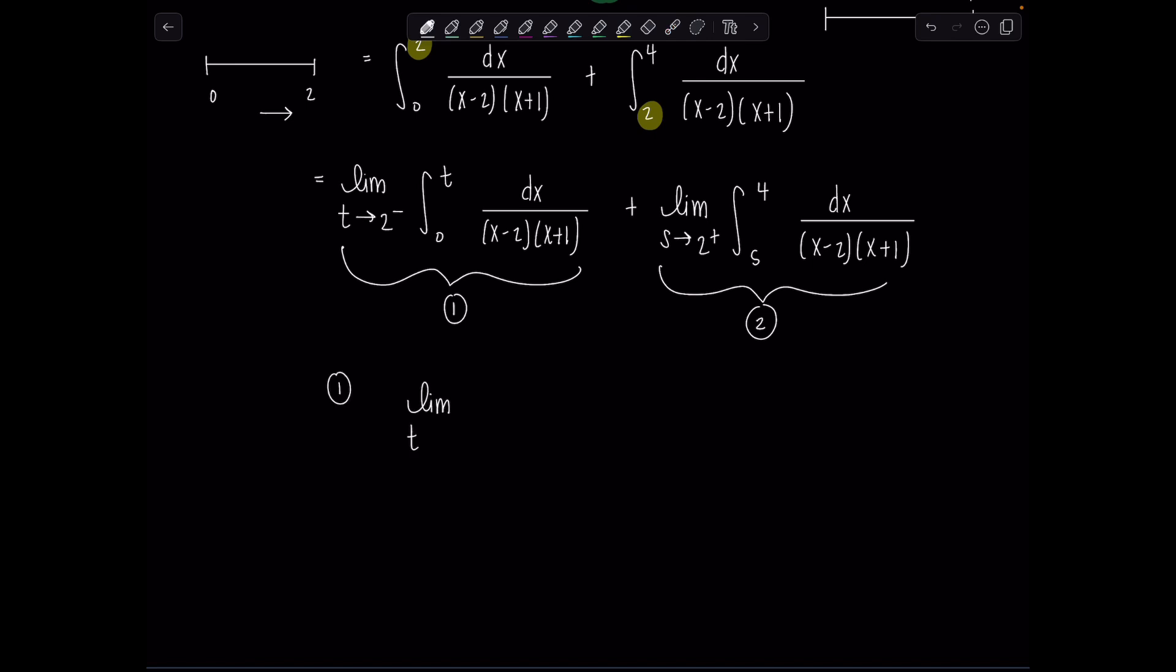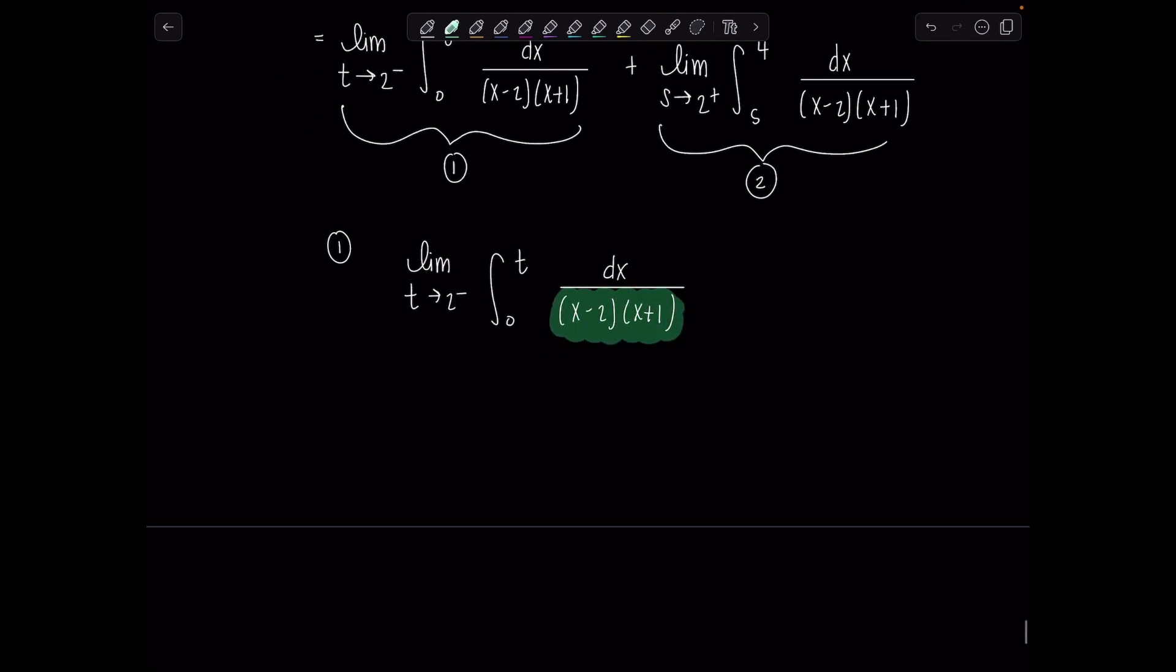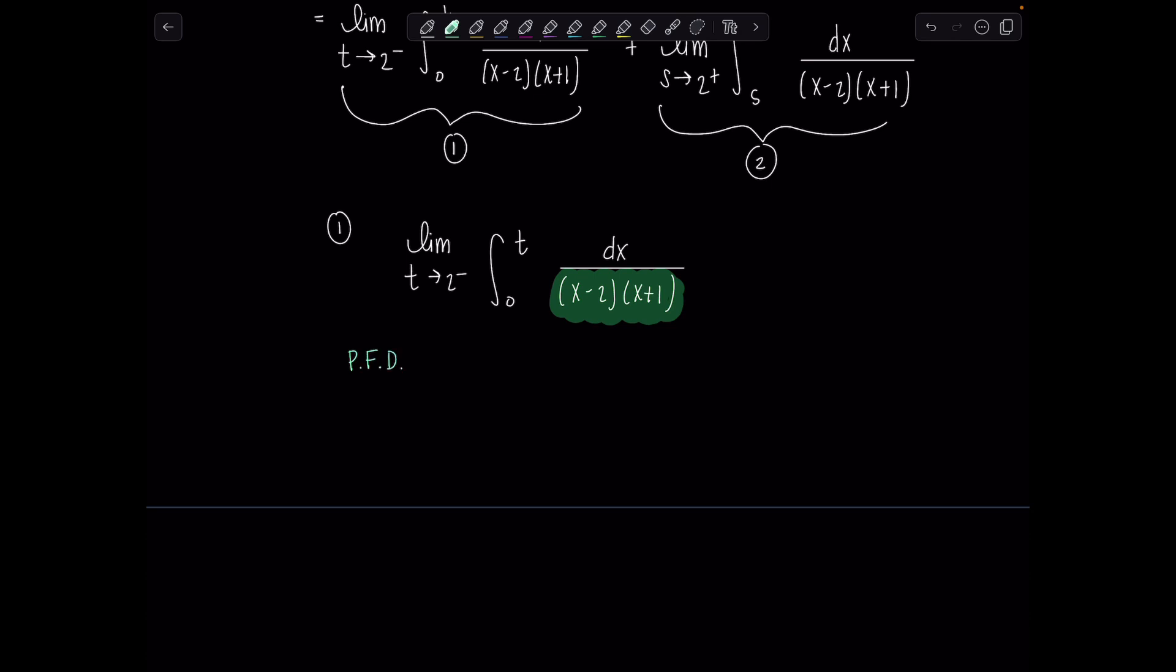So let's just focus on integral number 1. We have the limit t approaches 2 from the left. 0 to t dx over x minus 2, x plus 1. So looking at the integrand here, it's a rational function. So I want to find the partial fraction decomposition so that I can integrate. So partial fraction time,